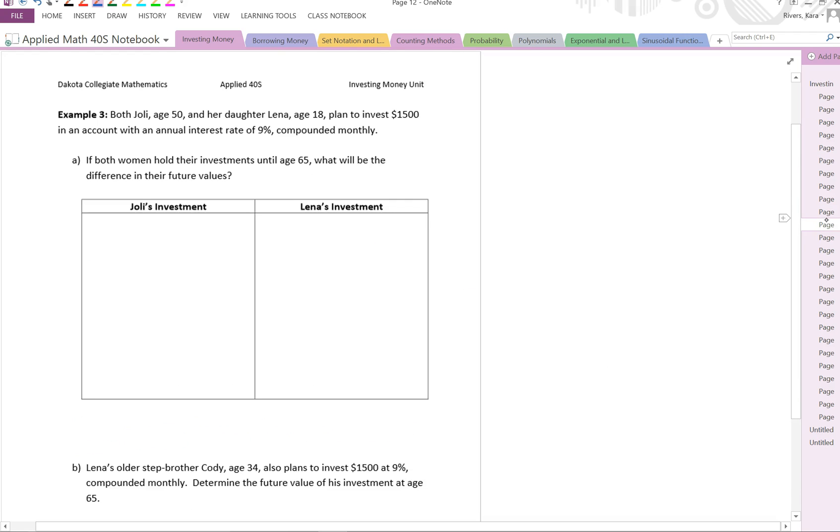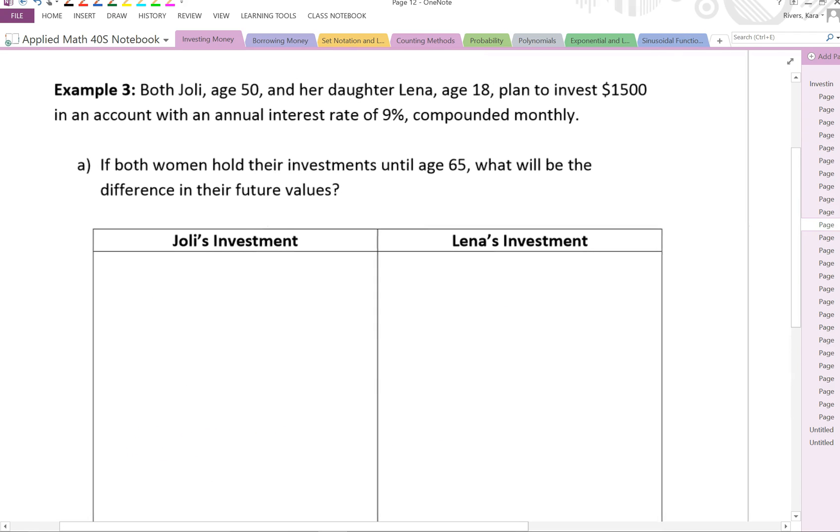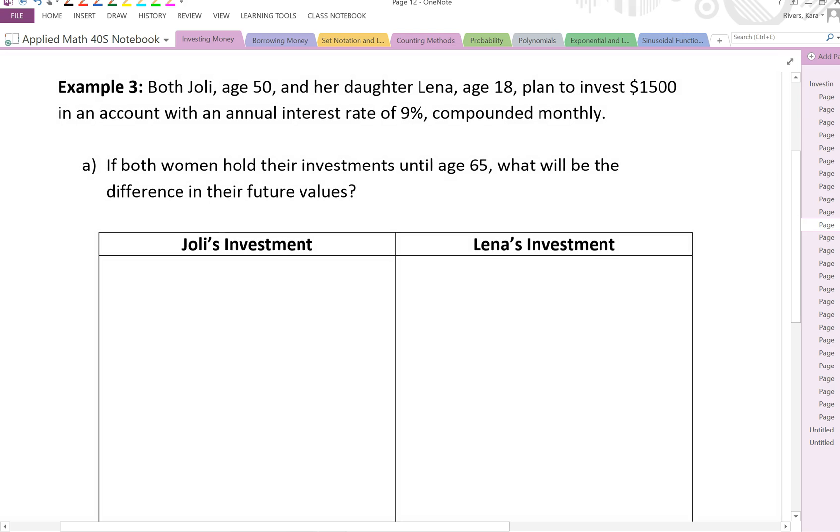So not only does compounding make a huge difference, but so does time. So let's take a look at the next example here. Example 3. It says Jolie, age 50, and her daughter Lena, age 18, plan to invest $1,500 in an account with an annual interest rate of 9% compounded monthly. First of all, 9% is quite high. It's nice to see that value. That means they're going to accumulate quite a bit of money through interest. But we can also see that they're different ages. The amount of time that their investments are going to be compounding is going to be different, too.